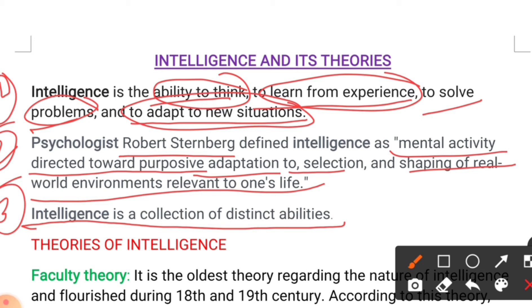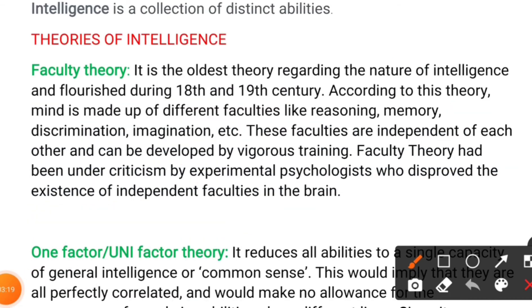Intelligence does not mean only being good at bookish knowledge, memorizing things, or keeping things in the brain. Intelligence can be in different fields. For example, if a sports person is able to play well, that is their intelligence in that particular area. In total, we have around five kinds of intelligence theories.